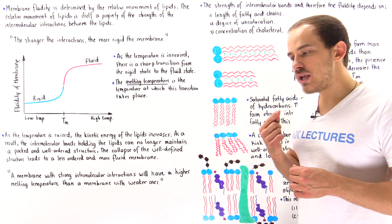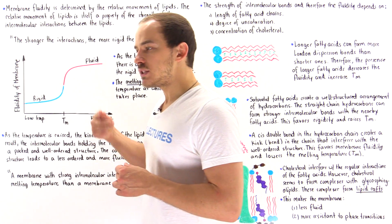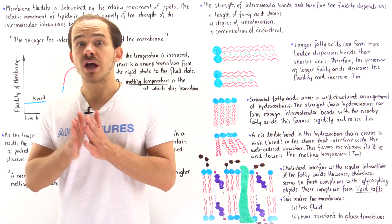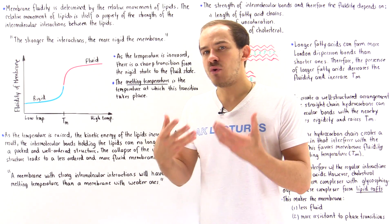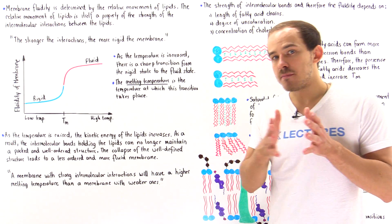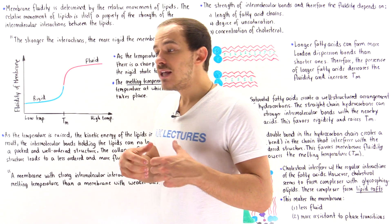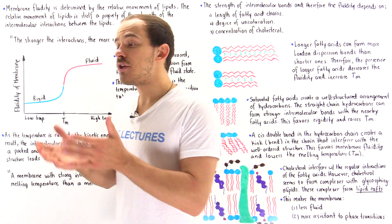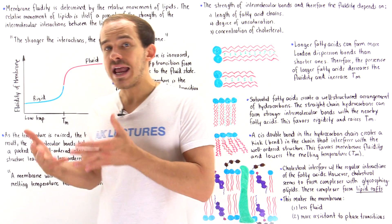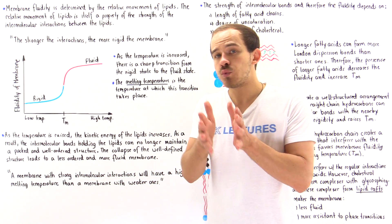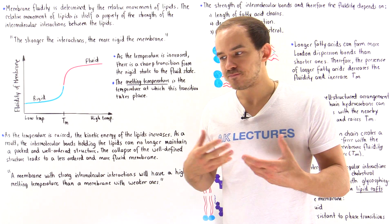If fluidity is determined by the relative movement, what determines the relative movement itself? The relative movement of the molecules within the membrane is determined by the strength of the attractions — the non-covalent intermolecular bonds that exist between the phospholipids and other molecules in the membrane.